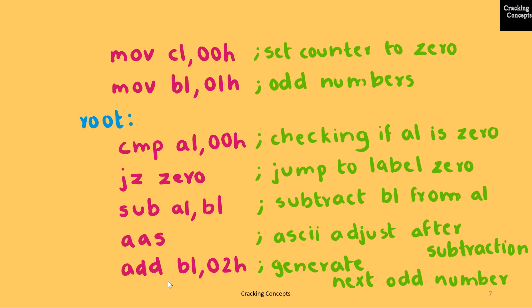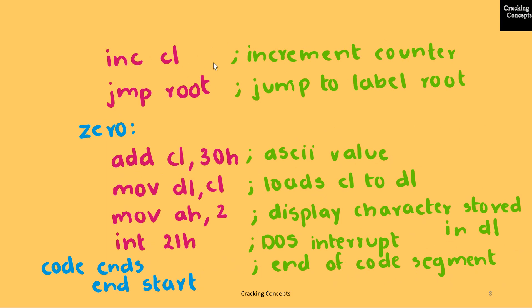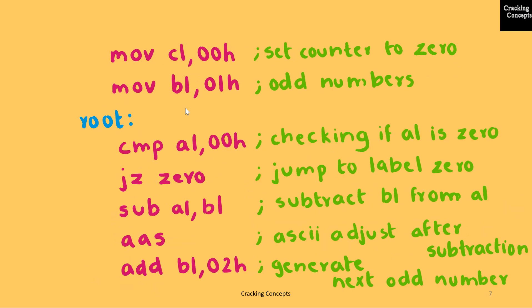In the next step, we'll increment the value of the odd number. Each odd number has a difference of 2 in between, so I'll add 2 to the register BL. Then we'll increment the value of counter, which is keeping track of the number of steps. Then we'll perform a jump to the label ROOT. These steps will be repeated until the value of AL is 0.